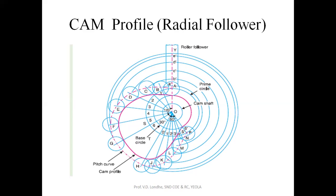Initially, 120 degrees is the angle of rise, 30 degrees is the dwell, and the remaining 60 degrees is the angle of descent. When making the displacement diagram, divide the rise and fall into six or eight equal parts. Those divisions will be directly reflected in the profile diagram. The prime circle will be divided into six equal parts. For the dwell portion, there is no need to divide because the follower will be at a constant position with no motion.